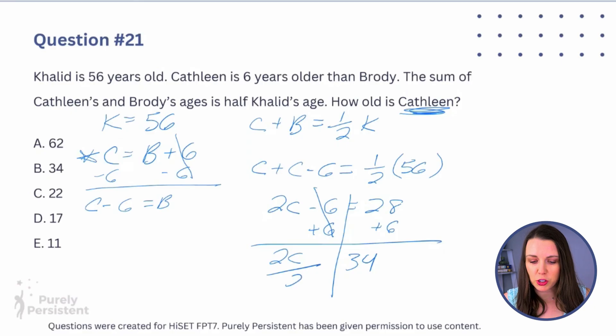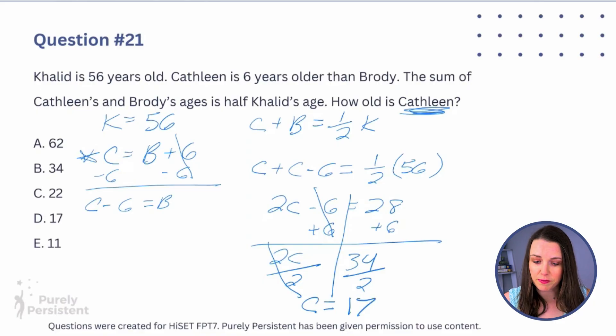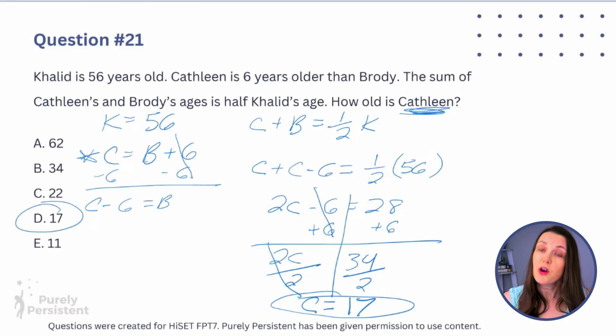Now I divide both sides by 2 — that's a song from the 80s that helps me remember what to do! Dividing by 2 gives K = 17, so Kathleen is 17 years old. That's our answer.